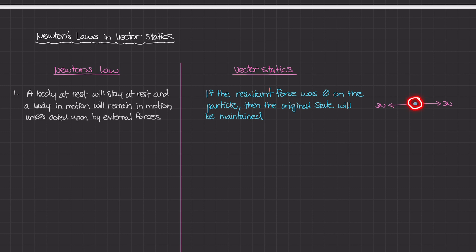However, if this object was initially moving at a constant velocity and you then apply three Newtons to the right and three Newtons to the left, the resultant of both those forces is zero. And if that's true, then the acceleration is zero. So Newton's first law states that if the object was at rest and the resultant forces are zero, the object will remain at rest. If it was moving at a constant velocity and the resultant of the applied forces was zero, then the object will continue to remain in motion.